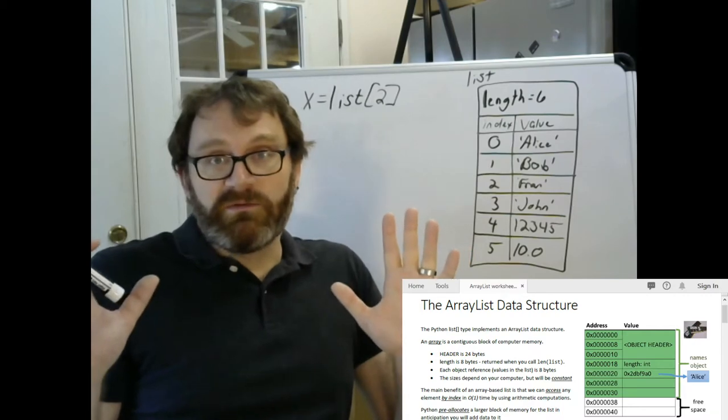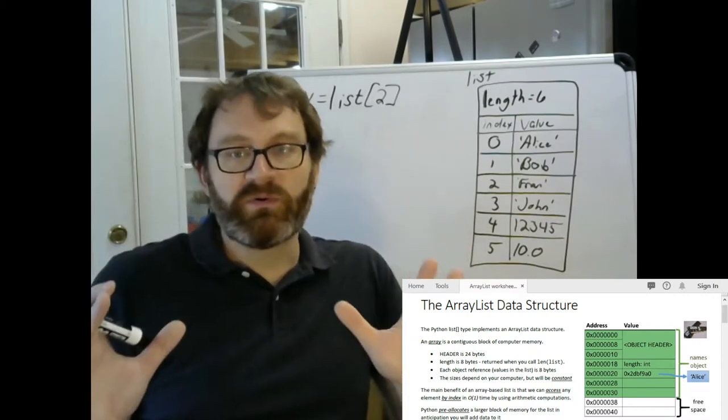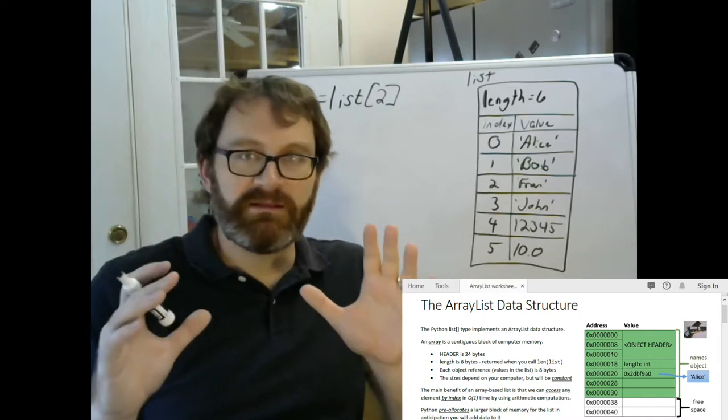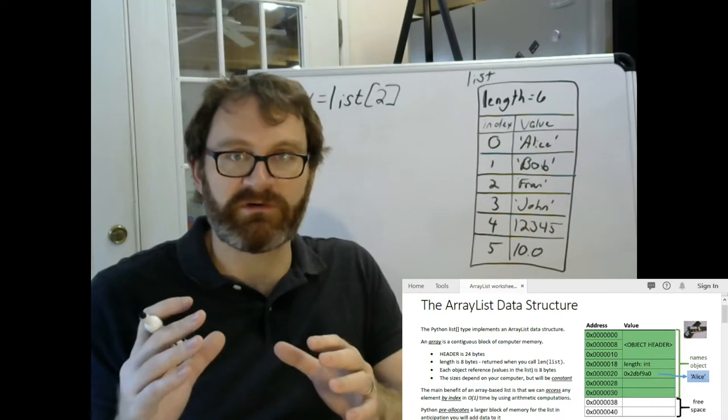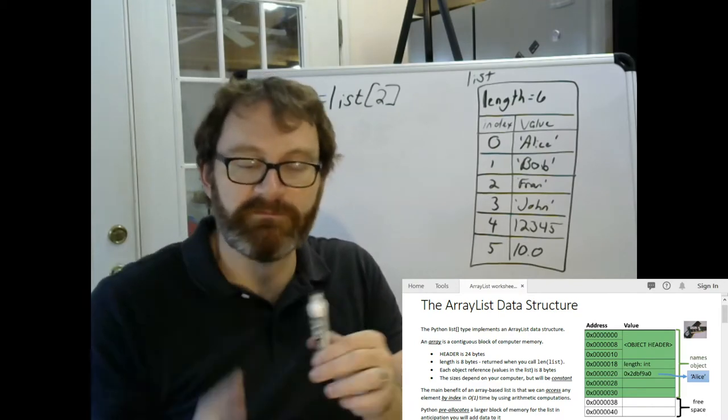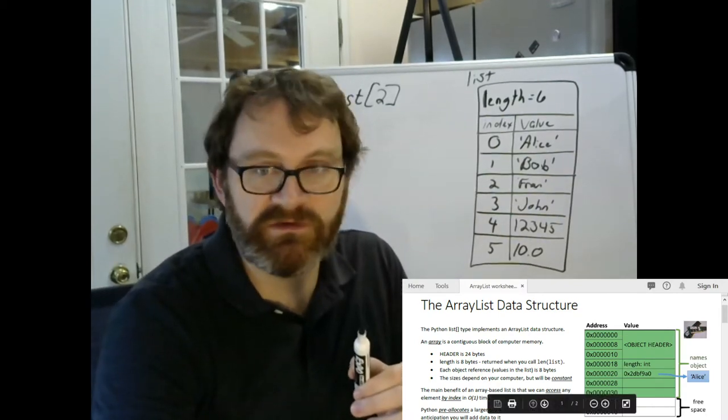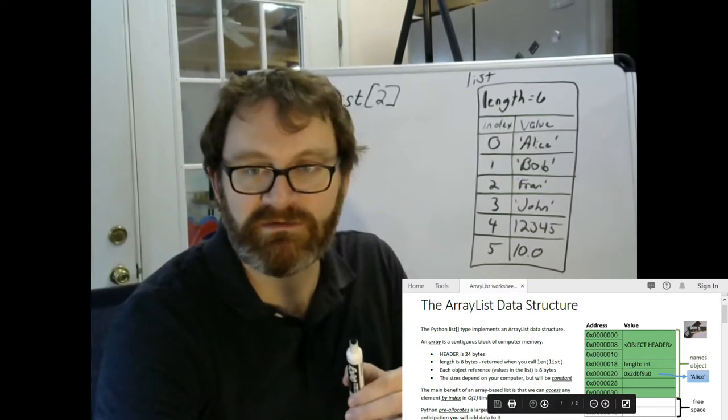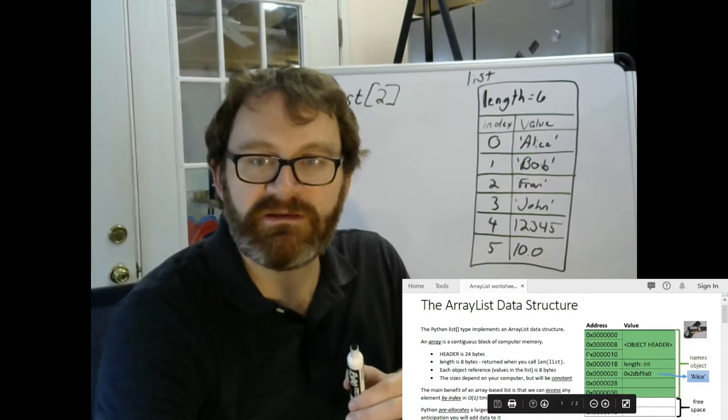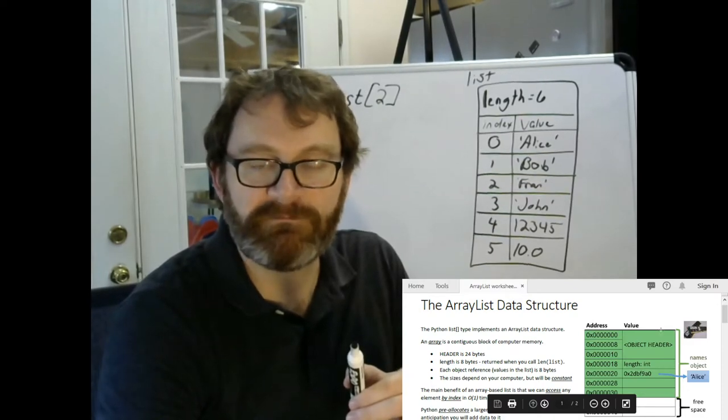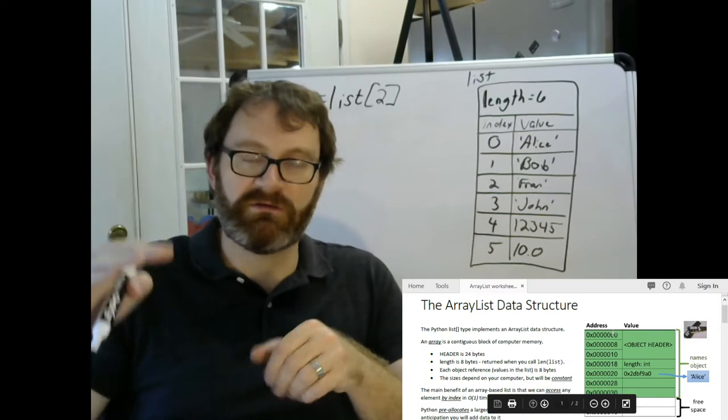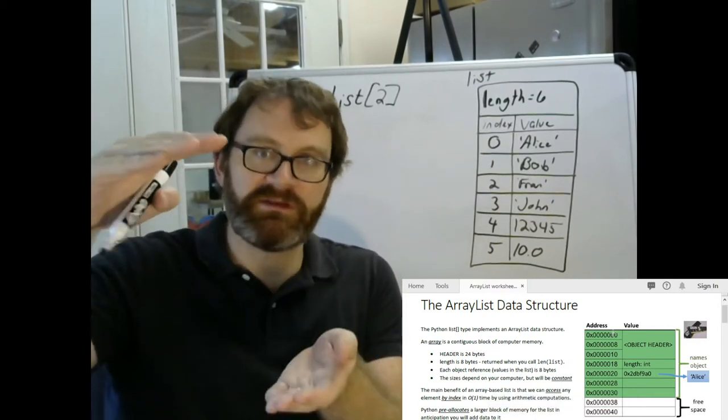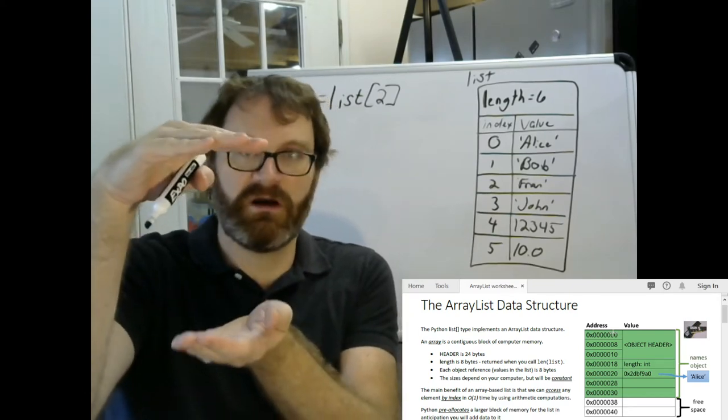The way the ArrayList works - remember, the key point here is that when you make a list in Python, it allocates (which is the fancy term for setting aside a space in memory) a fixed region. It chooses a fixed region in memory, and that region is contiguous. It's all packed in together.